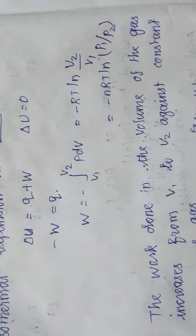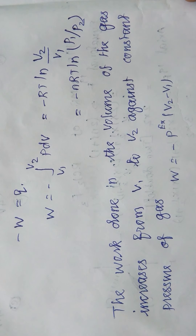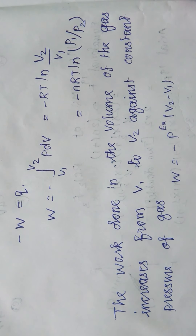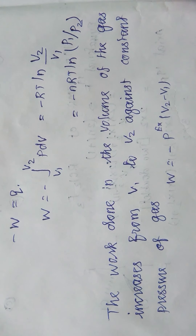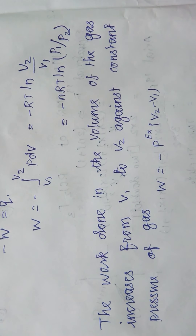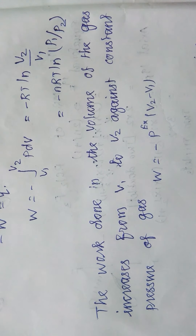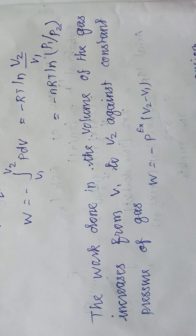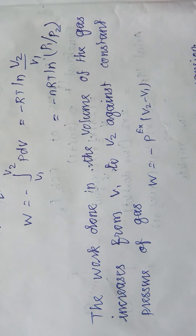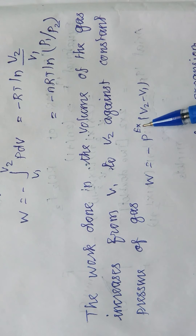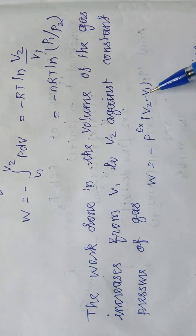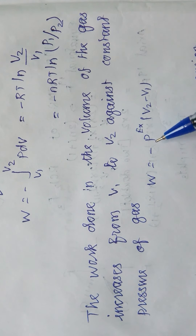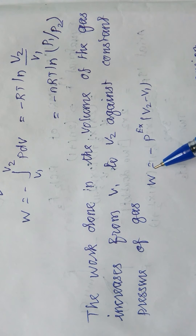The second case: the work done when the volume of the gas increases from V1 to V2 against a constant external pressure. If the volume increases against a constant pressure, the external pressure is the same — it is not increasing. In that case, the work done is W = -P_external × (V2 - V1).